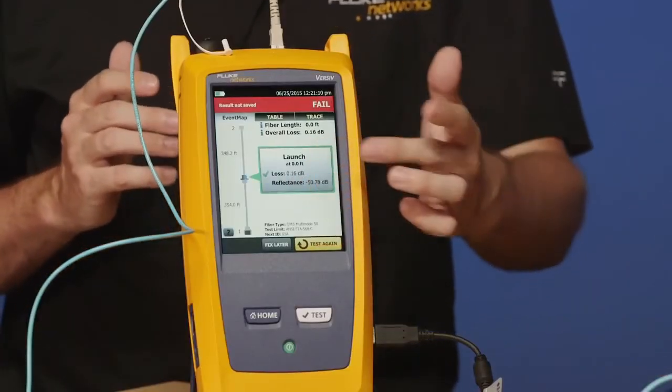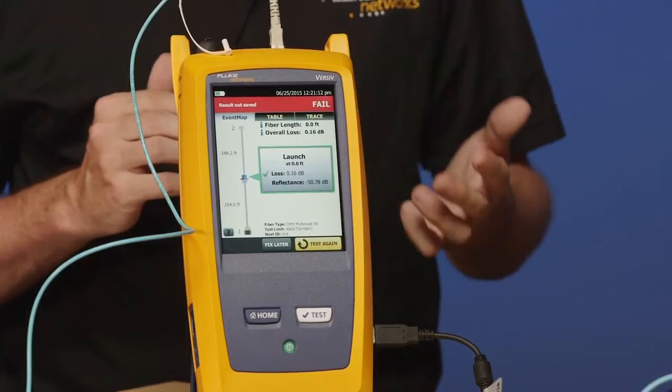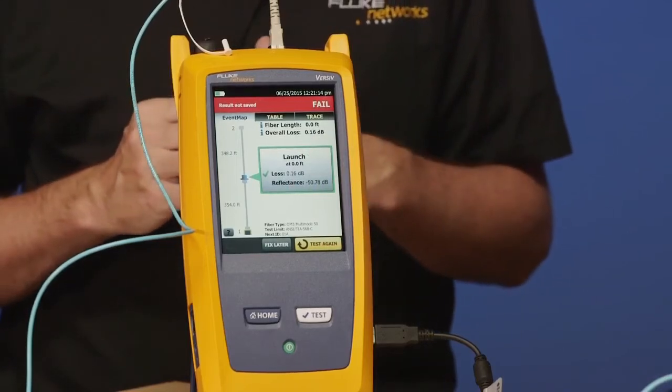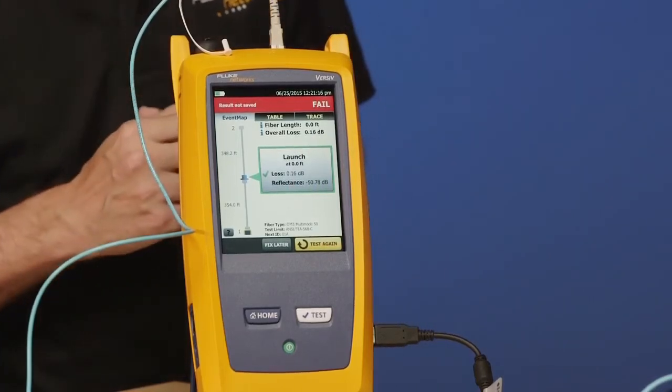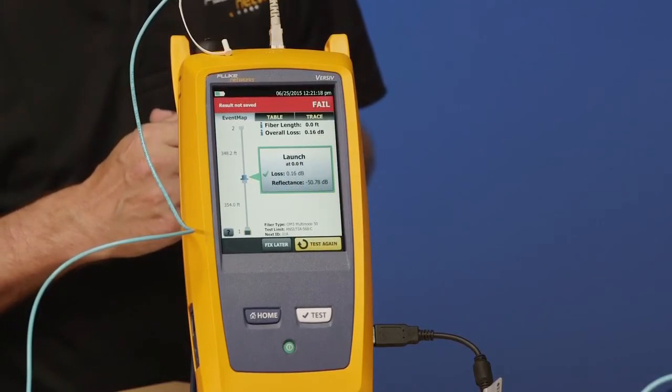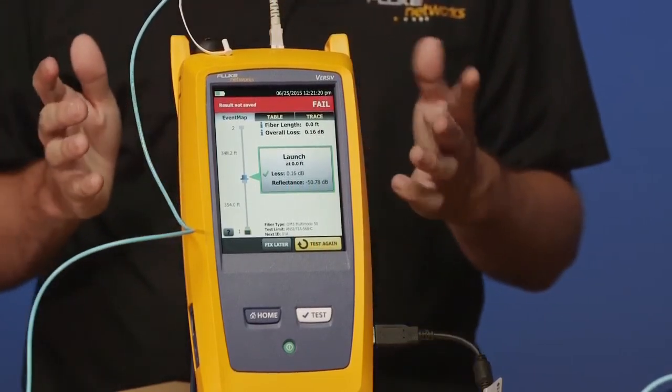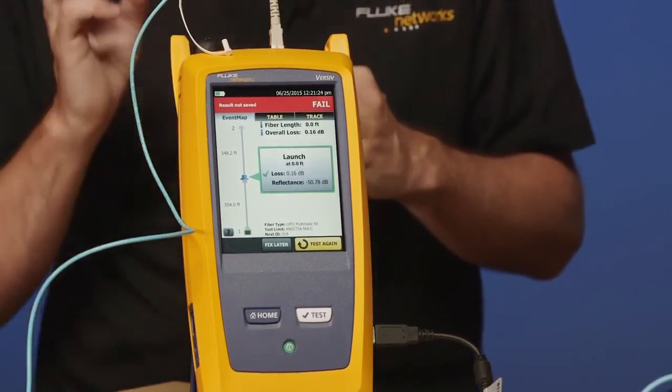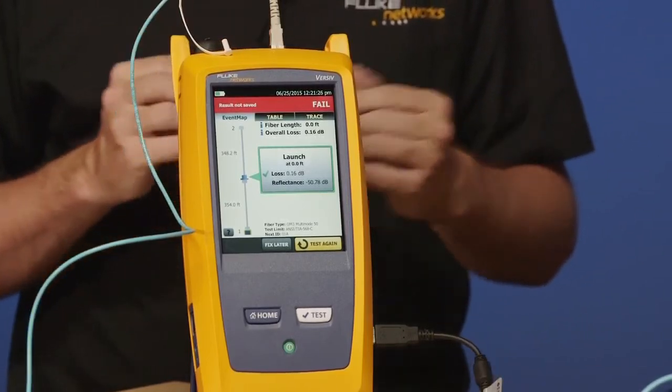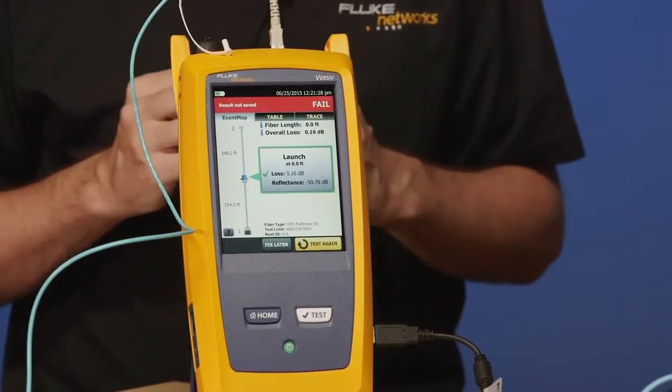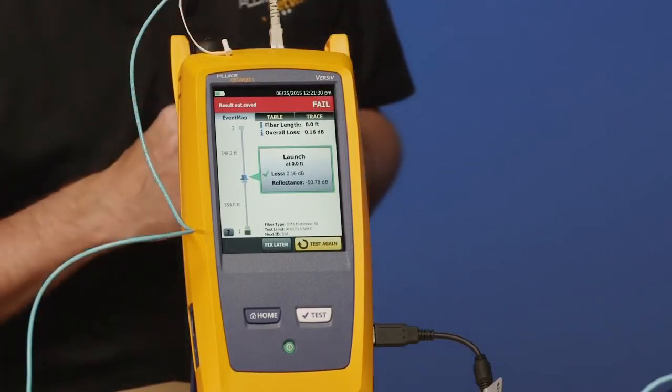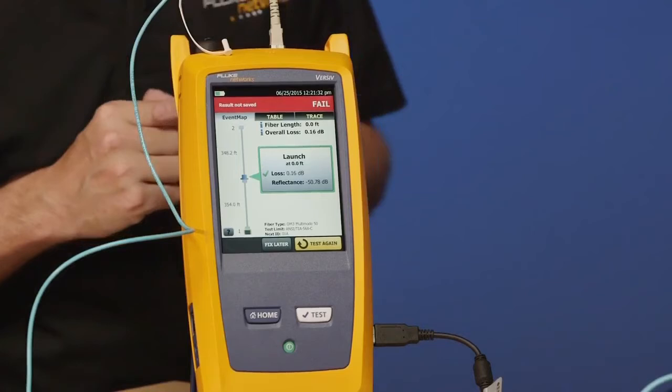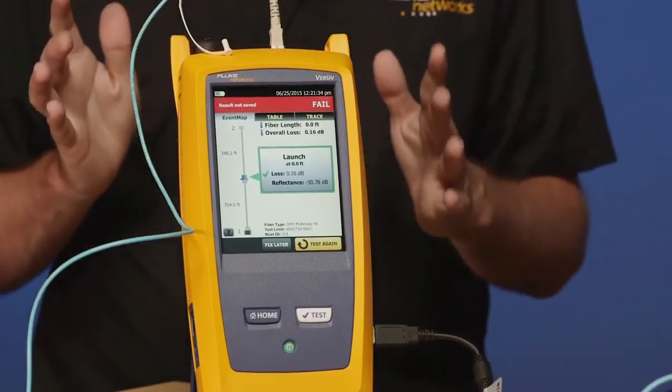And you'll see the event map. Now on the event map here, you'll see a loss and a reflectance value. What's the loss value on there at the moment, Amanda? 0.16. That's a pretty nice value. It's around that 0.15 dB value that we're looking for. That's not the most important value here though. The value I really want to take a look at is reflectance below that. So what's that reflectance number there? Negative 15.78. That's pretty nice numbers.